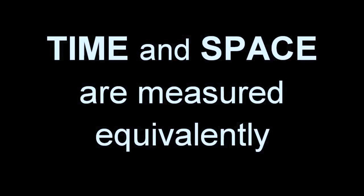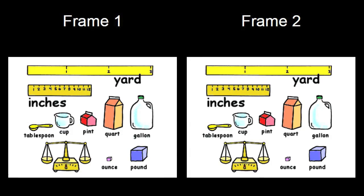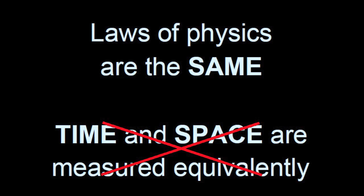The second postulate is that time and space are measured equivalently in all reference frames. This seems natural, right? One foot or one second in my reference frame shouldn't be any different from a foot or a second in any other reference frame. The second postulate is false, and has been replaced by the constant speed of light in vacuum.